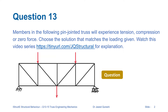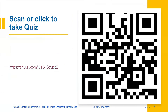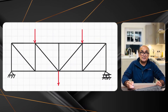In the first example, members in this pin-jointed truss will experience tension, compression, or zero force — you have to choose the correct answer from four options. If you want to have a go at this question, pause the video now and solve it. You can also take the quiz by scanning the barcode or going to the URL provided in the description.